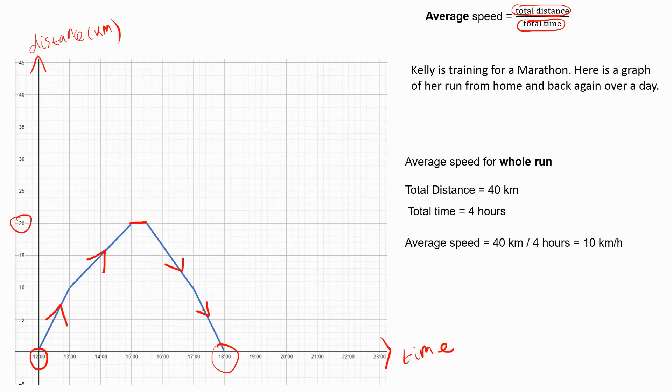I might want to work out her average speed while she is running, so not including this section when she's clearly taking a break, when she's staying still. To do this, I need to look at the total distance she's travelled while running, which is still 40 kilometres, but the time is slightly different. Because we don't include the time that she has the break, we need to work out what the scale of the graph is. In one hour, the graph goes up in five small squares.